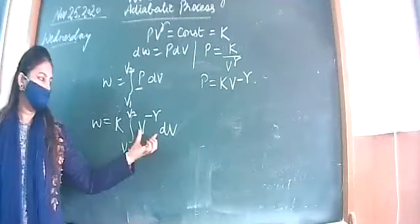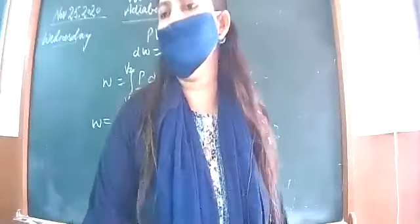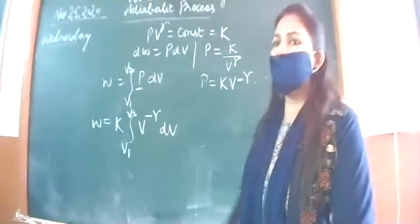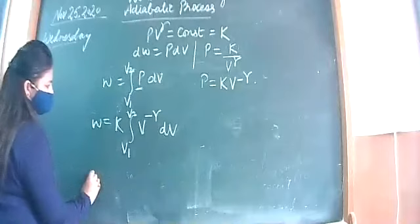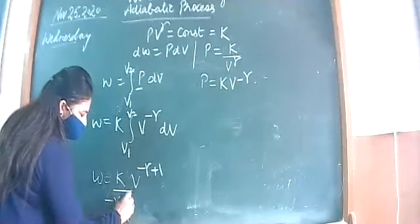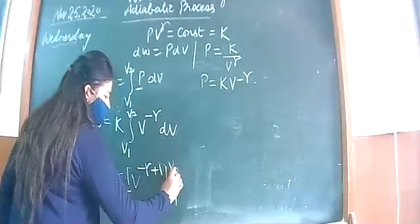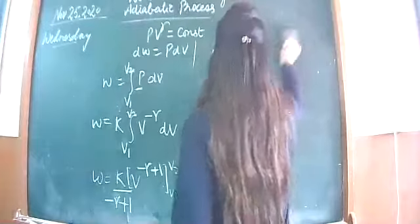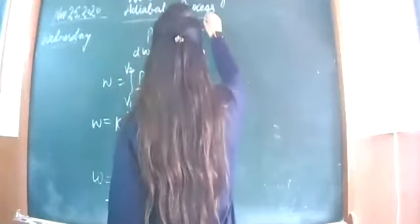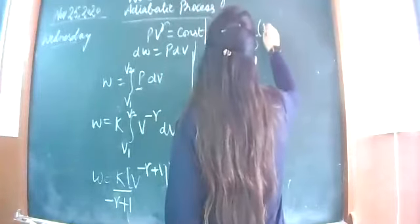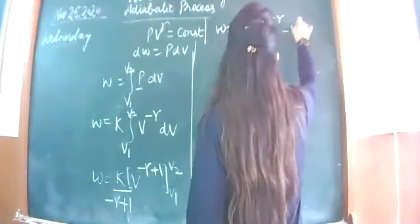Applying the simple rule of integration, we get V raised to power minus gamma plus 1 over minus gamma plus 1. So W equals k times V raised to power 1 minus gamma over 1 minus gamma within limits V1 to V2. Applying the limits gives k upon 1 minus gamma times V2 raised to 1 minus gamma minus V1 raised to 1 minus gamma.